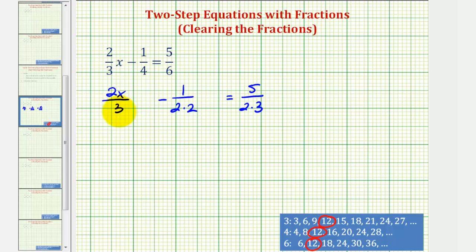So looking at this first fraction, notice how it only has one factor of three, but since this fraction has two factors of two, this fraction needs two factors of two. So we're going to multiply the numerator and denominator by two factors of two. Notice how this product is equal to twelve, giving us our LCD.